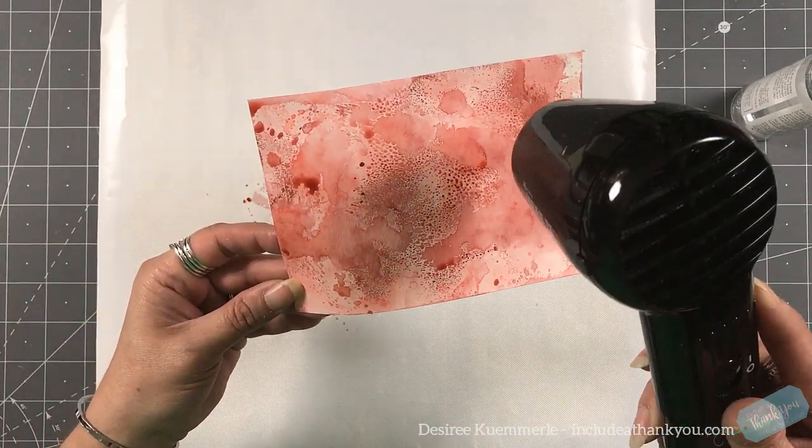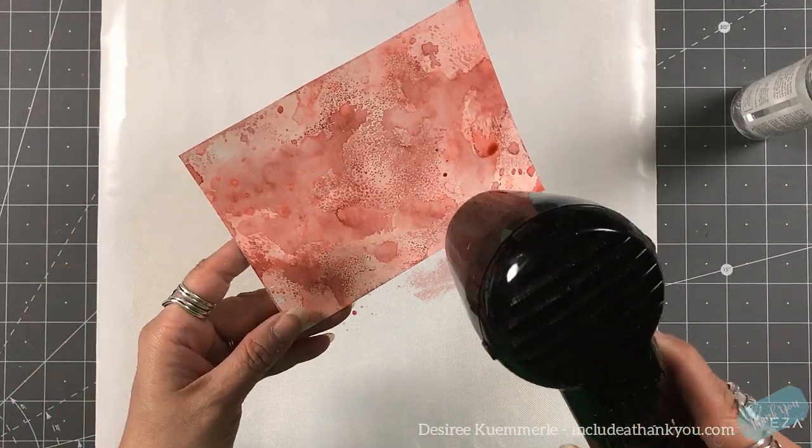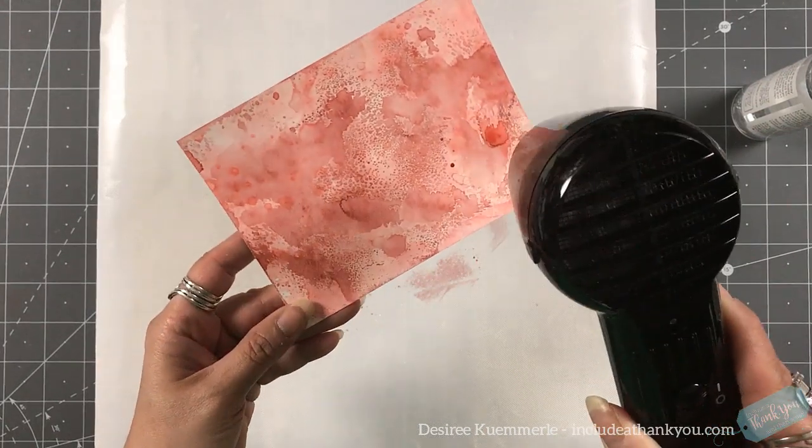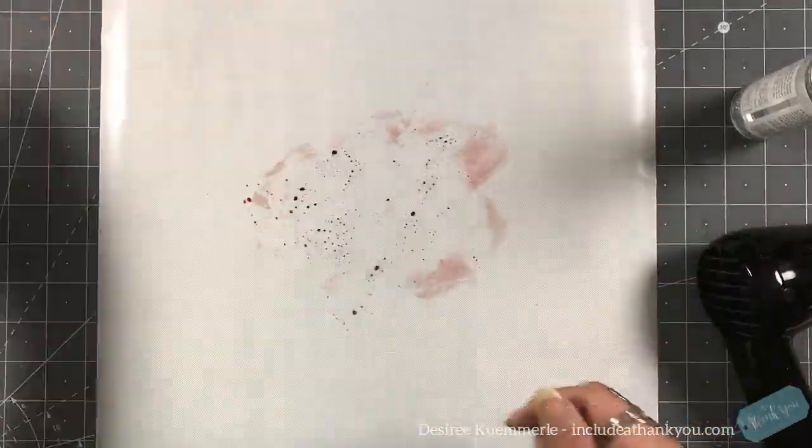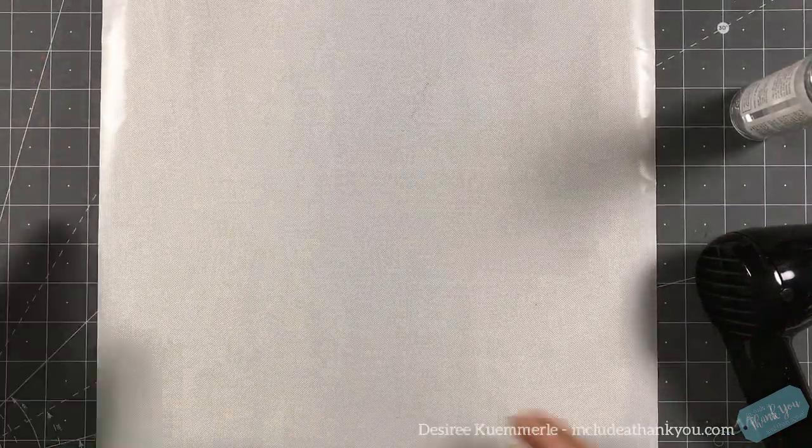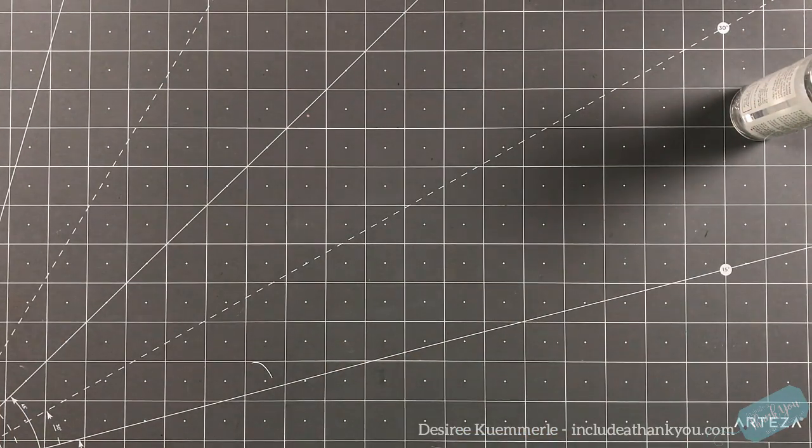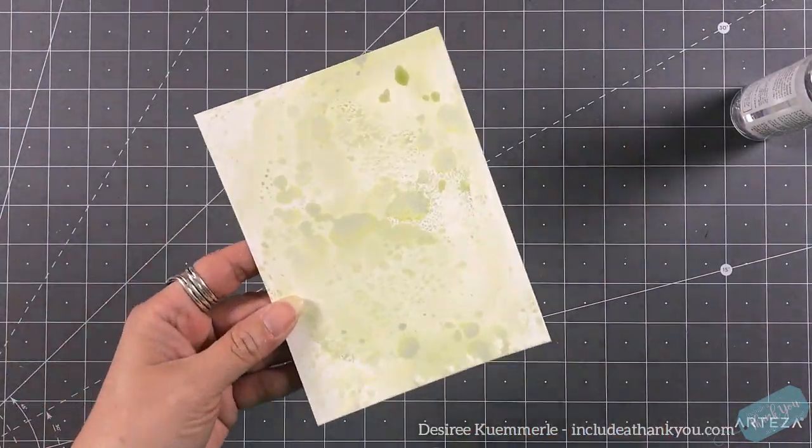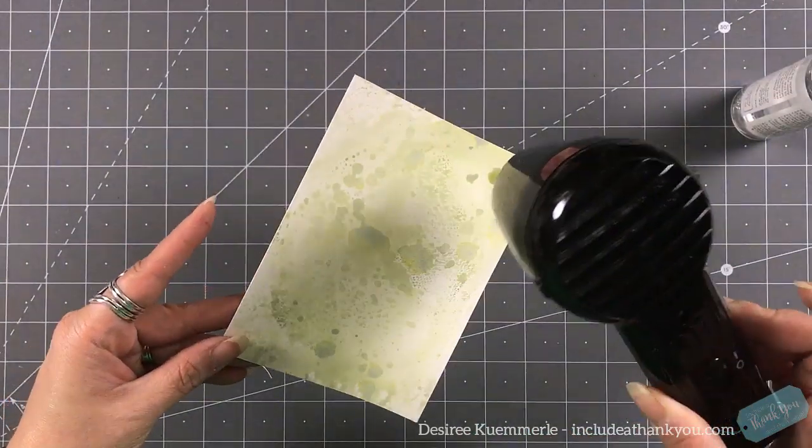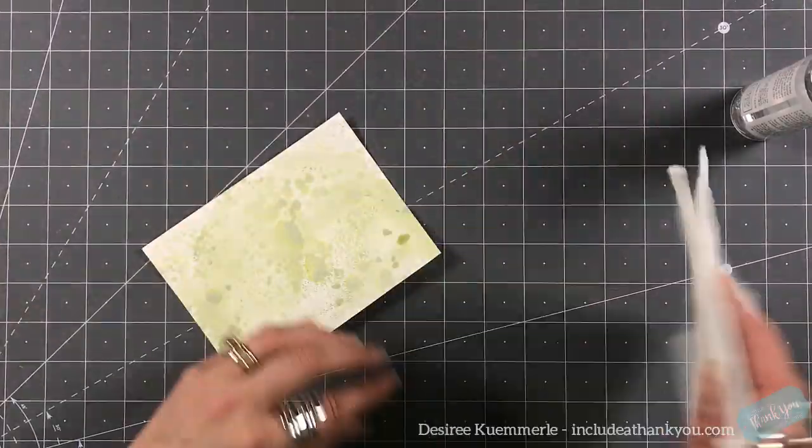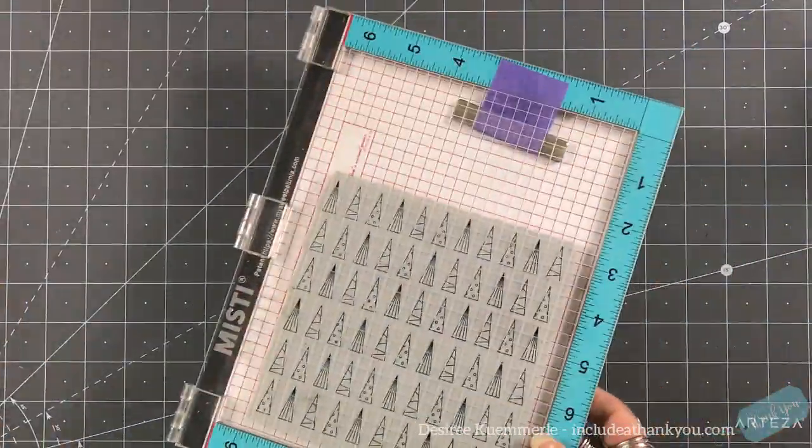So once that panel is dry, I want to make sure this one's good and dry because again, we can do so many different things when it comes to a background stamp. Now this one, while it's got a repeat of the image, it's a specific image. It's not like words or anything like that. So this one does give you a lot more versatility on the backgrounds that you can create. I'm just going to real quick dry this up just a little bit more, just to make sure that it is dry before I run it through my die cutting machine.